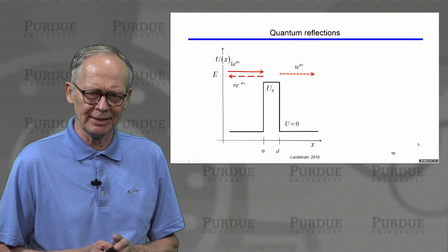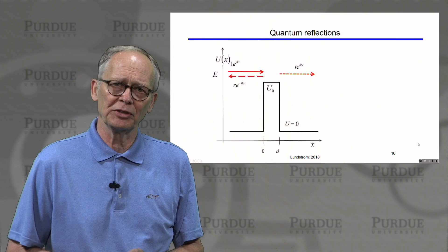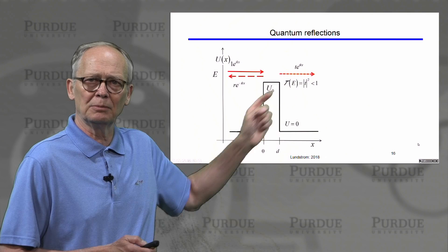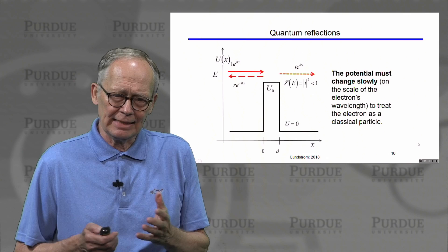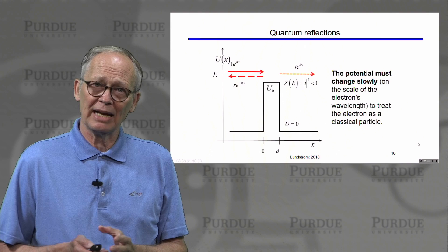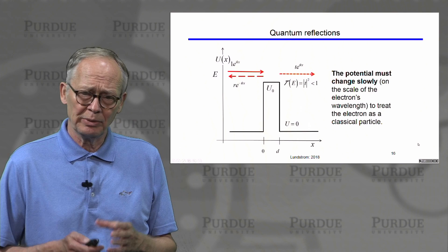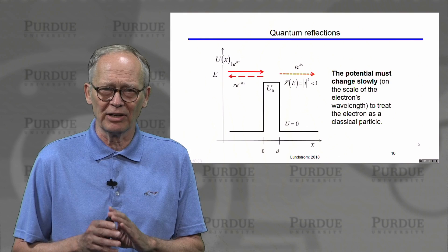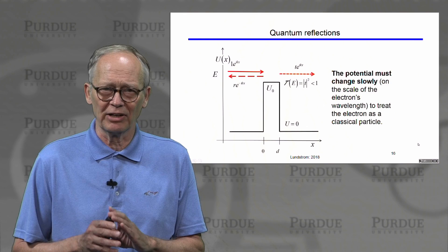Quantum mechanical reflections can also occur and are worth knowing about. A classical particle with enough energy to get over a barrier would simply do so, but for a quantum mechanical particle there is a probability of reflecting off the barrier even when it has sufficient energy — this is quantum mechanical reflection. To avoid such reflections, we would want to vary the potential slowly so that the electron doesn't see an abrupt change. How slowly? On the scale of the electron's de Broglie wavelength — roughly 10 nanometers in silicon — so the potential must vary slowly on a 10-nanometer scale to prevent quantum mechanical reflections.